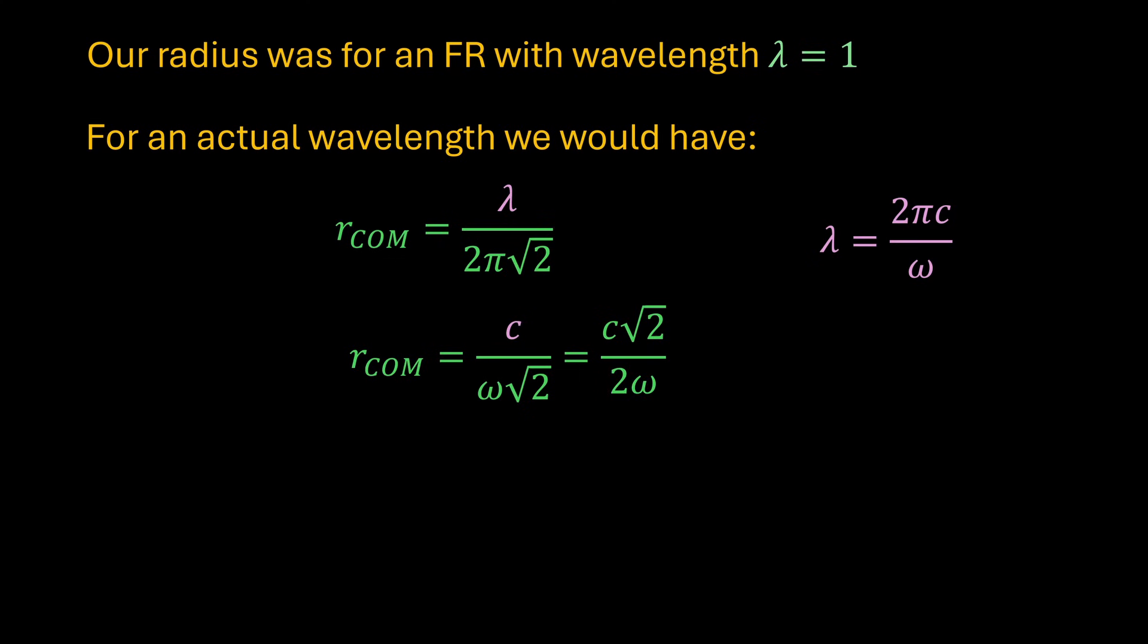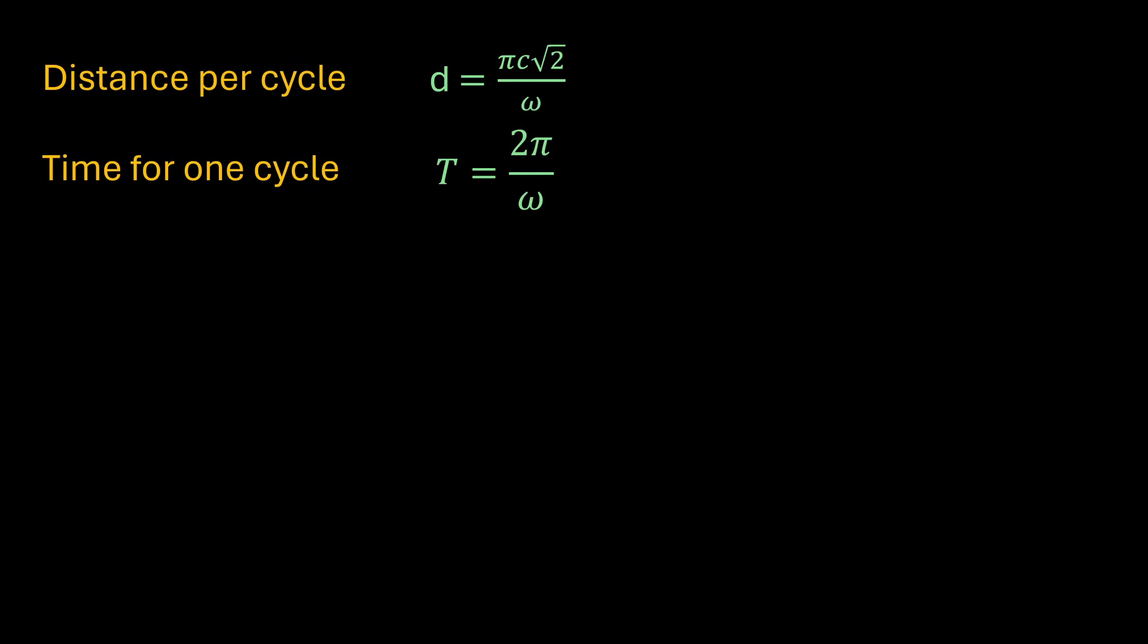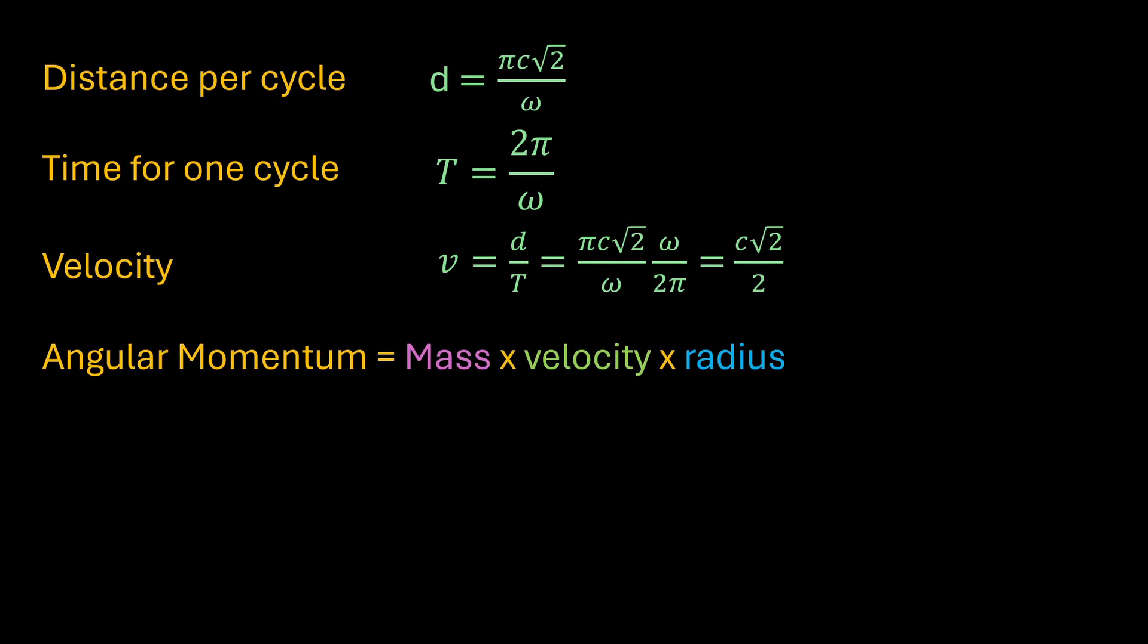We can express lambda the wavelength in terms of omega the frequency using the general equation for a wave which gives this expression. Then we can calculate the distance covered by the centre of mass as d in this expression and we know that the time for one cycle capital T is just the period 2π over ω. Hence we get the velocity and angular momentum is just mass times velocity times radius. So this ought to be easy. But this is where the sleepless nights come in.